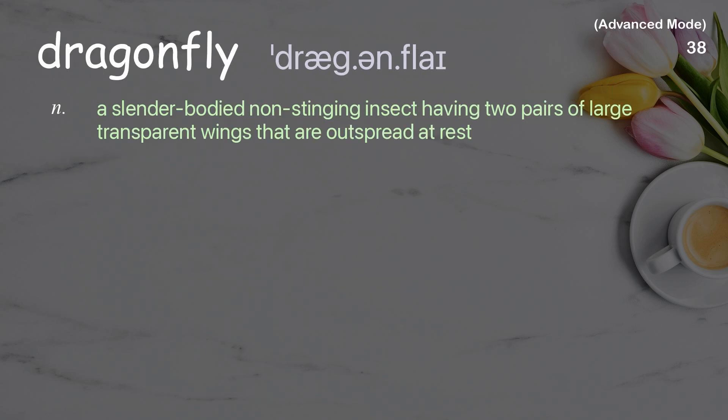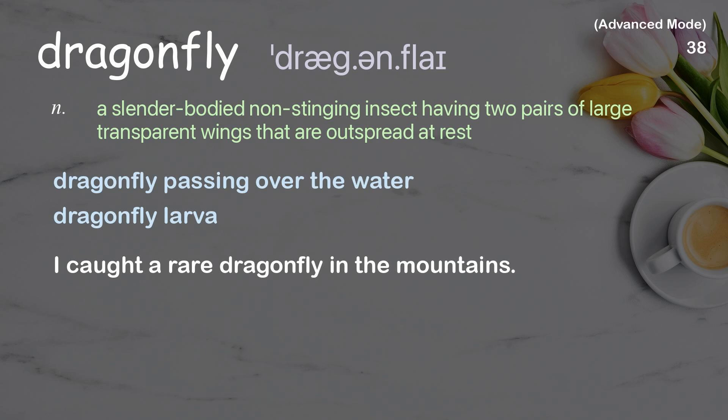Dragonfly: a slender-bodied non-stinging insect having two pairs of large transparent wings that are outspread at rest. Examples: dragonfly passing over the water, dragonfly larva. I caught a rare dragonfly in the mountains.